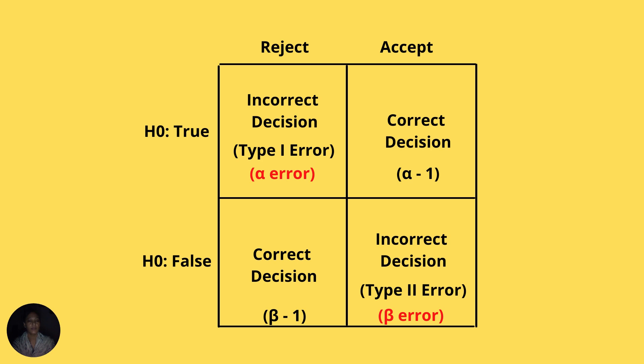Similarly, if I have a null hypothesis that is false, and my test results support that null hypothesis, that means I am again making a mistake by accepting an incorrect or false null hypothesis. This is an incorrect decision and is known as type II error or beta error.